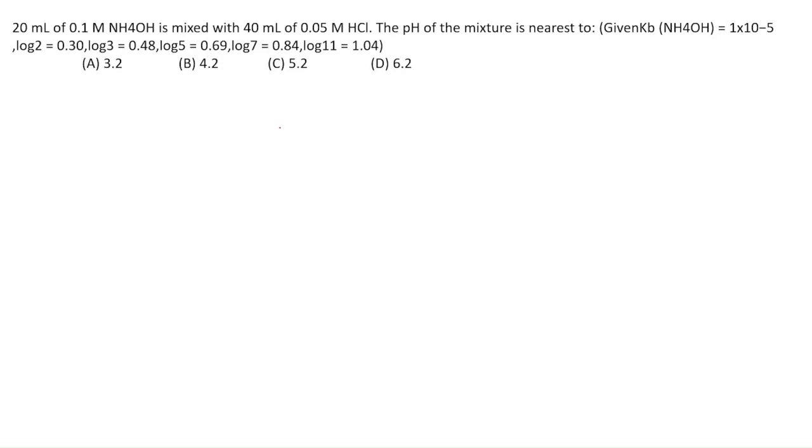The question asks: 20 ml of 0.1 molar NH4OH is mixed with 40 ml of 0.05 molar HCl. The pH of the mixture is nearest to what value?